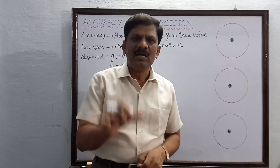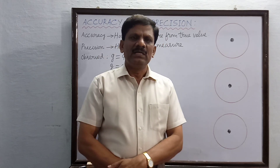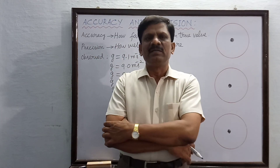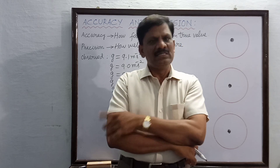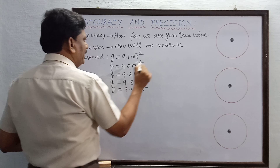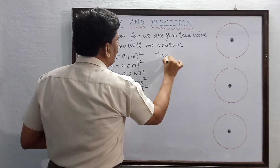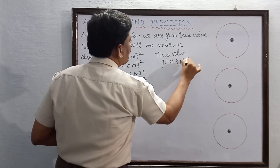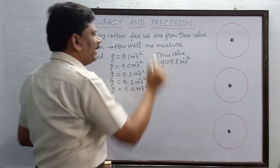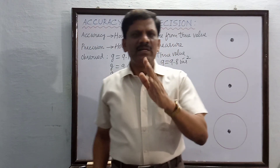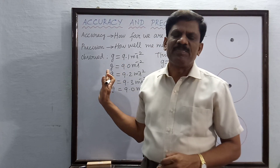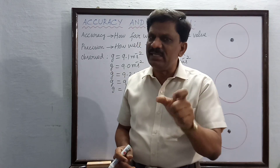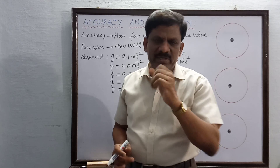Now, the experimentally determined true value of g on Earth is 9.8 m/s². The true value of g is 9.8 m/s², which is quite far from each of these observed values. Therefore, though all the measurements are precise, they are not accurate.